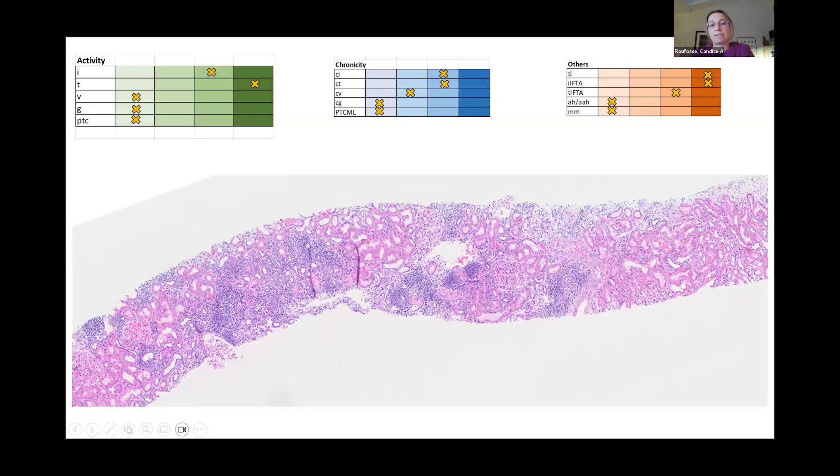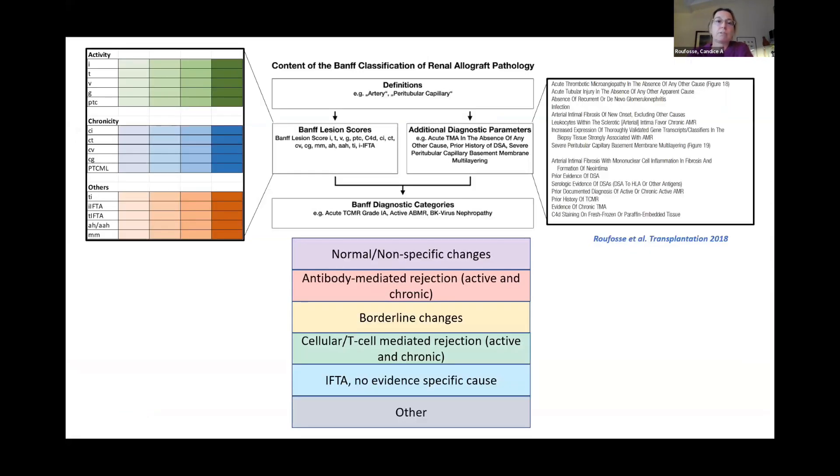So that semi-granular scoring gives you a lot of information on what the biopsy looks like down the microscope. The way the Banff classification works is essentially to combine these Banff lesion scores along with some other parameters to produce the Banff diagnostic categories.